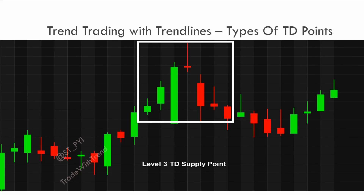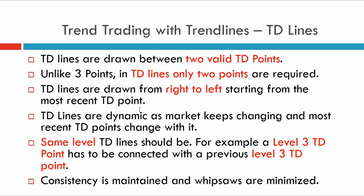Now that you understand how to identify a TD point, let's move on to TD lines. There are some specific rules for drawing TD lines. Rule number one: a TD line can only be drawn between two valid points. This is extremely important because in a traditional trend line method, you can take any number of points and join them together, which creates confusion about which points to prefer.